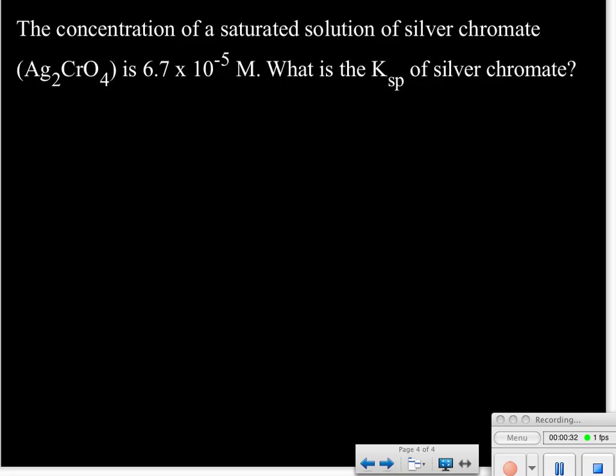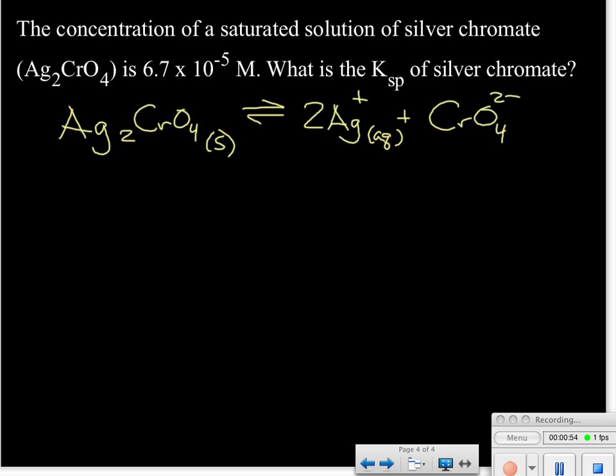A good thing to start with is a balanced equation. So we're going to be talking about our silver chromate, and most of it's in the solid form, but we're going to be at equilibrium with two silver ions plus our chromate ion that's going to be in the solution. We've written our balanced equation. Now we can write our Ksp expression, and these should always be your first two steps that you take when you do one of these problems.